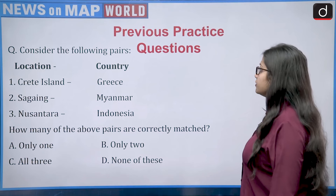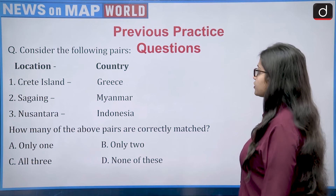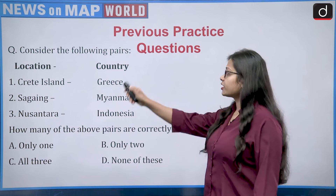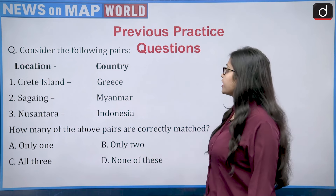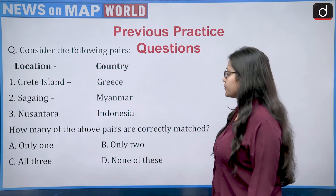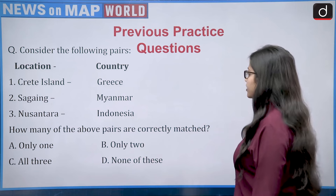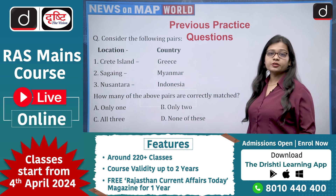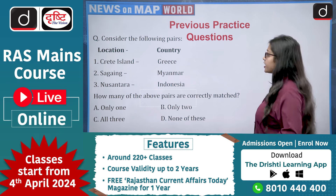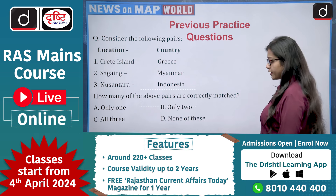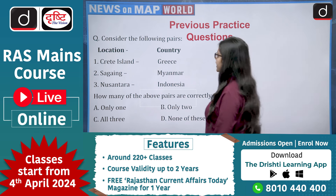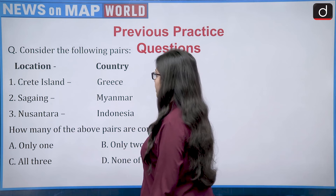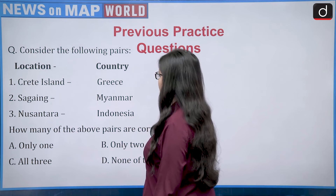The previous practice question asked: consider the following pairs — on one side a location is given, on the other side a country is given. It is asking how many of the above pairs are correctly matched. In total there are three pairs: first is Crete Island–Greece, second is Sagaing–Myanmar, third is Nusantara–Indonesia.